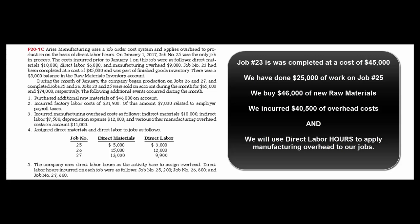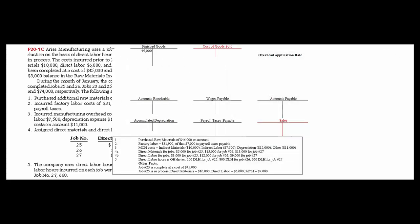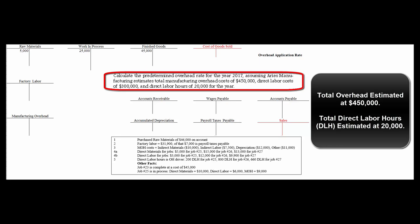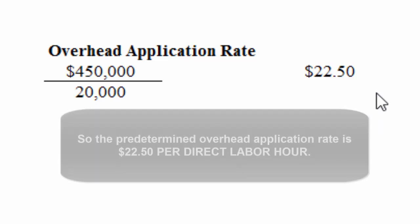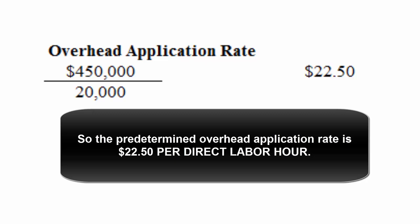The problem gives us facts about job 23 and the work done on job 25. It tells us we're going to use direct labor hours to assign overhead into work in process and to individual jobs. Estimated total overhead for the year is $450,000 and estimated direct labor hours are 20,000. So $450,000 divided by 20,000 direct labor hours means we apply overhead — we move dollars out of manufacturing overhead into work in process — at the rate of $22.50 per direct labor hour.